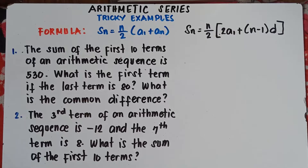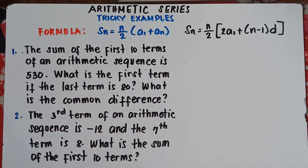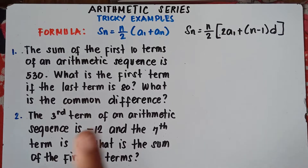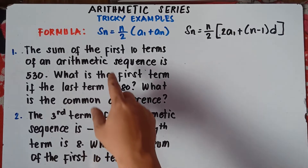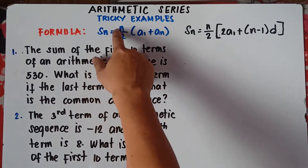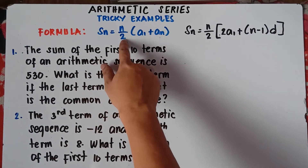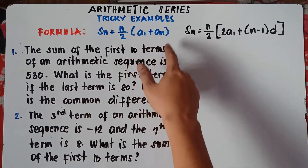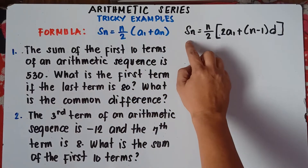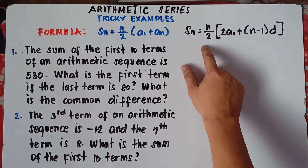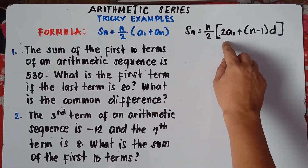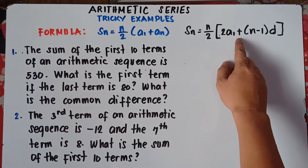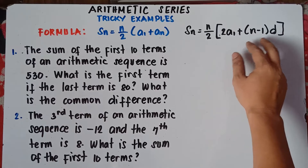This is quite tricky class since we don't have the value of our first term and our common difference, and we are told to find the sum. Now before we answer numbers 1 and 2, we need to know first the formula of arithmetic series. We have two formulas. The first formula: S of n equals n divided by 2, times the quantity of the first term added by the last term.